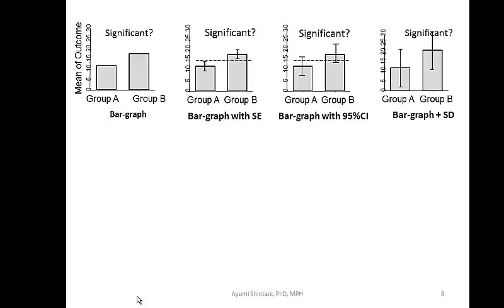Now, what if the error bars represent standard deviation? Standard deviation has nothing to do with p-value. If data are normally distributed, mean ± 1 standard deviation covers about 67% of your sample values — not 95%. For 95%, you need two times the standard deviation, which describes the range of your samples.